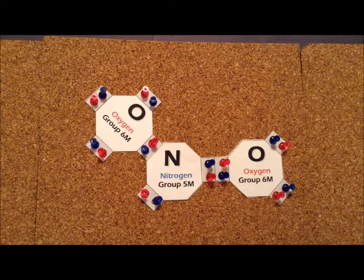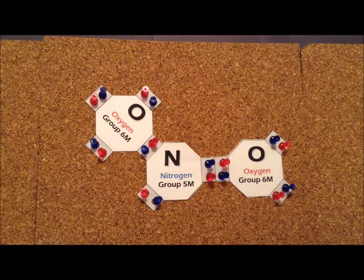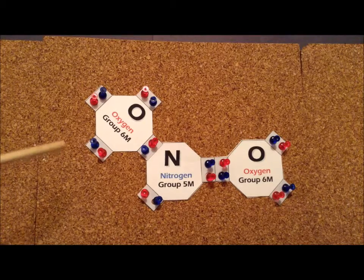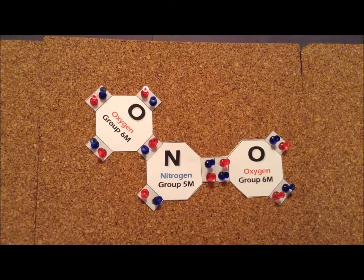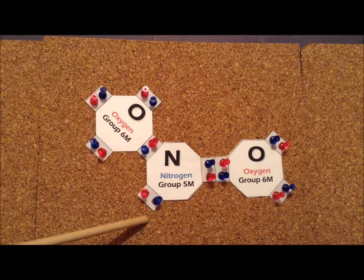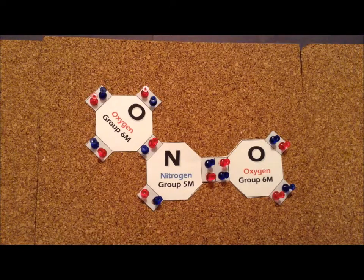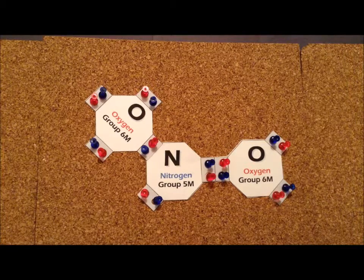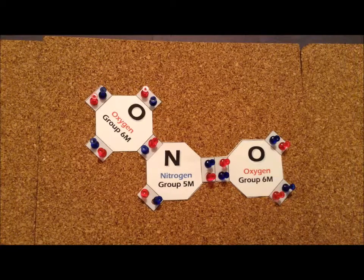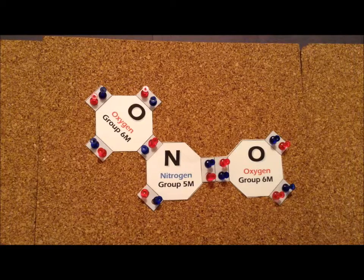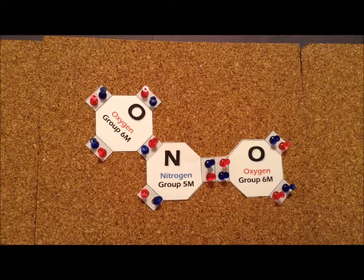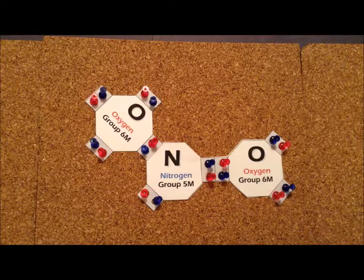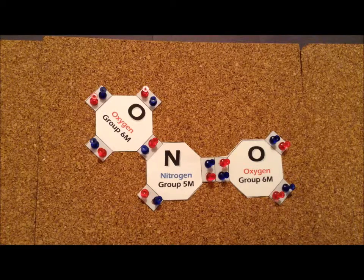If we weren't sure otherwise, and we were starting just with the ion, we would have 6 times 2 electrons for the oxygens, plus 5 for nitrogen, which gives us 17 electrons. And we realize that the chemical formula for nitrite ion is NO2 with a minus 1 charge. So we have to add an 18th electron for the minus 1 charge. So again, we have an 18 electron system.